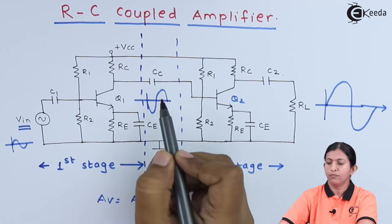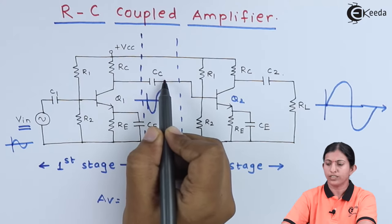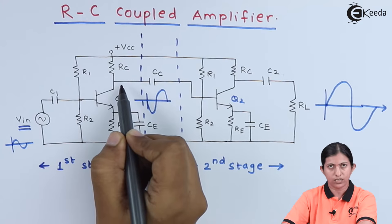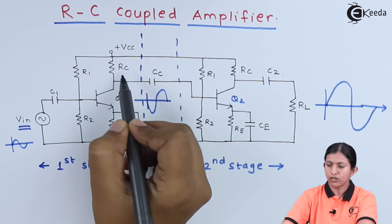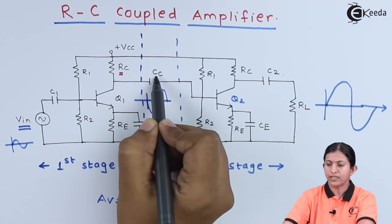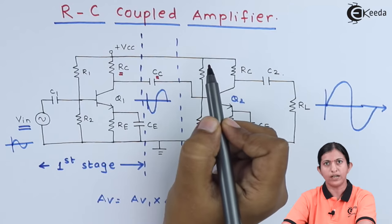Here between the two stages, we are using this coupling capacitor CC which couples the output of the first stage to the input of the second stage. Because of the RC and capacitor CC, this amplifier is known as an RC coupled amplifier.